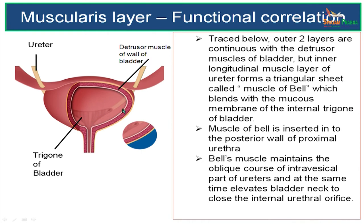What you are seeing in this picture is the base of the bladder. You can see a triangular area — this is the internal trigone of the bladder. In the lower ureter, the inner longitudinal muscle layer forms a triangular sheet called the muscle of Bell, which blends with the mucous membrane of the trigone of the bladder.